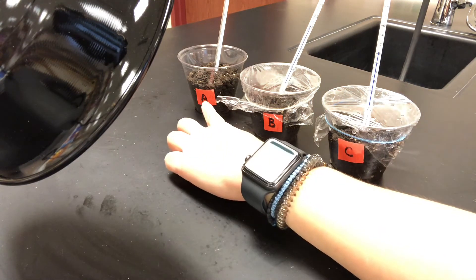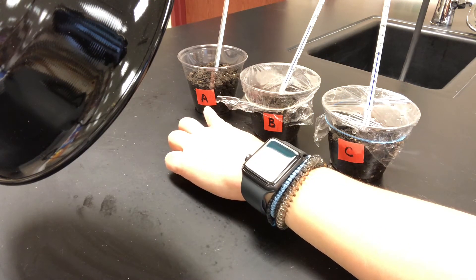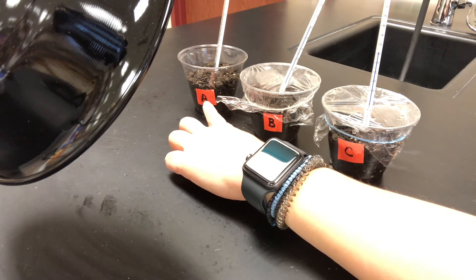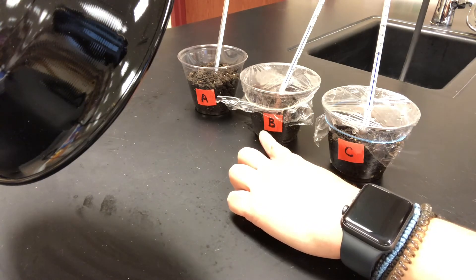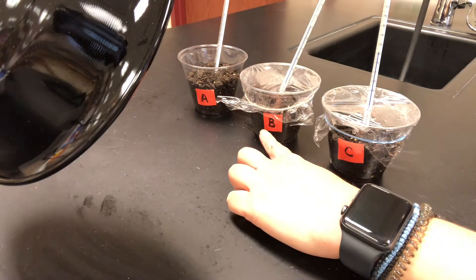Will it be Cup A, which is under open conditions where the soil is not covered by anything? Will it be Cup B, which is covered only in plastic wrap?